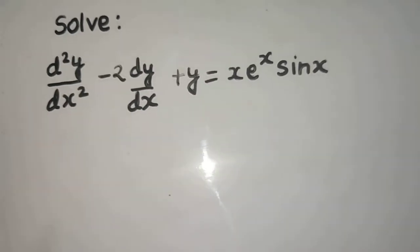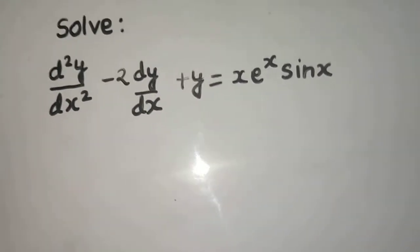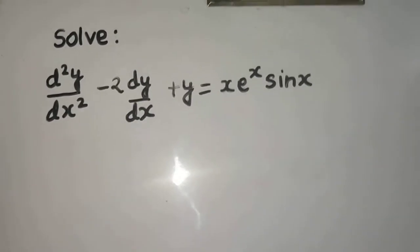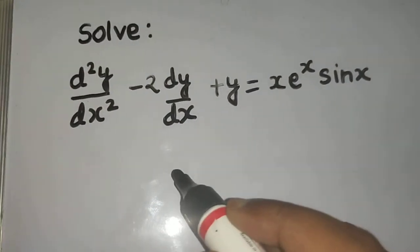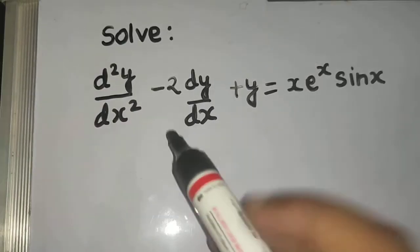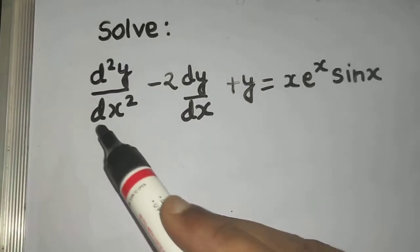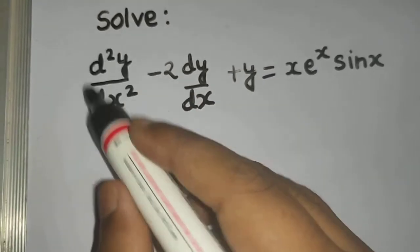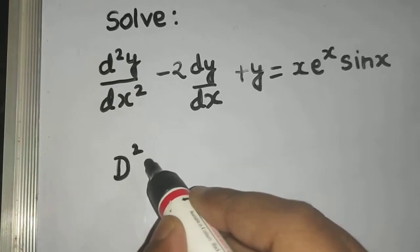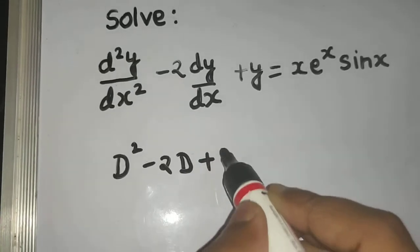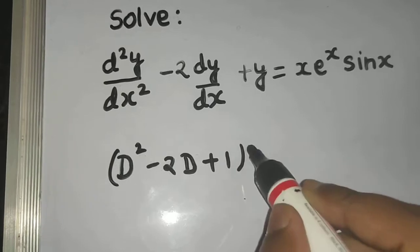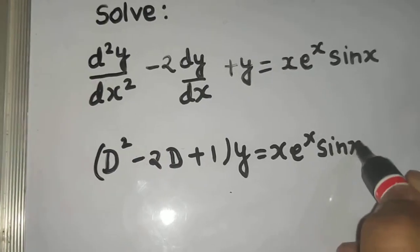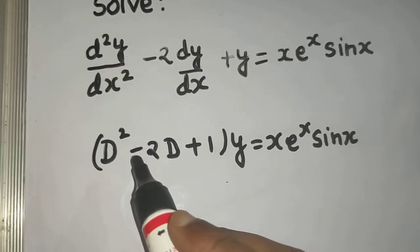We have a question on linear differential equations with constant coefficients. In this type of question, we need to find the complementary function and the particular integral. Let's first proceed with the complementary function. Convert the equation to D-form: it can be written as (D² - 2D + 1)y = x·eˣ·sin x.